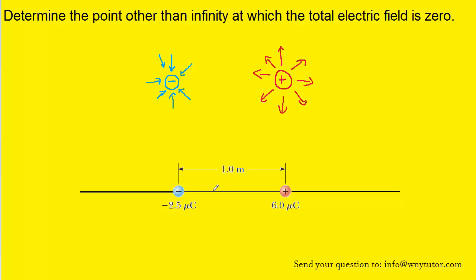For example, imagine that we were examining this point right here. The negative charge would produce an electric field that points towards the negative charge — in the left direction. The positive charge would also produce an electric field pointing away from the positive charge, which would also point to the left. Since both electric fields are pointing in the same direction, there would be no opportunity for them to cancel each other out.